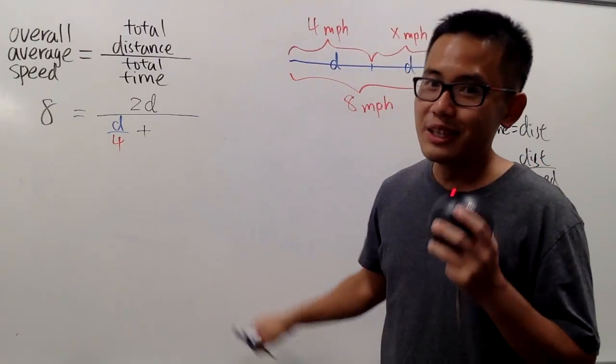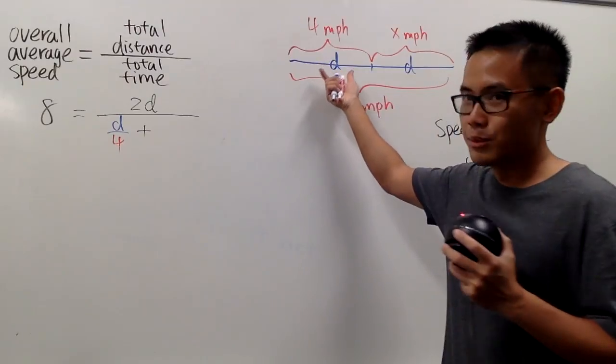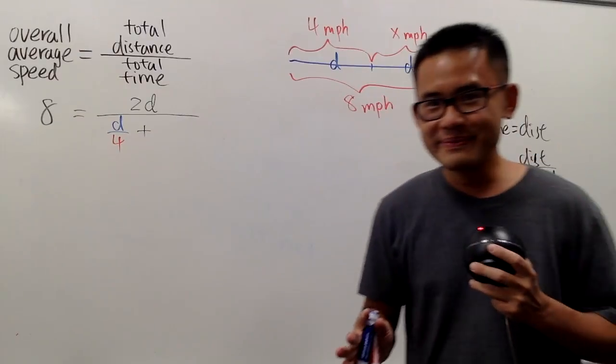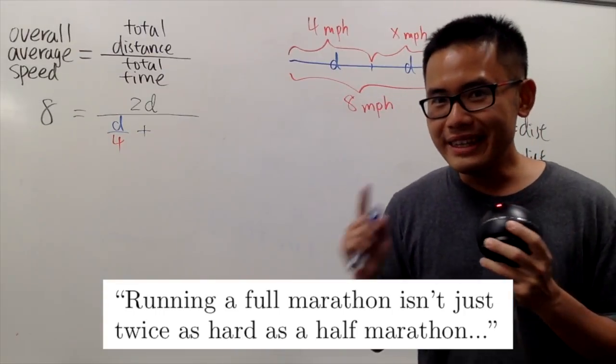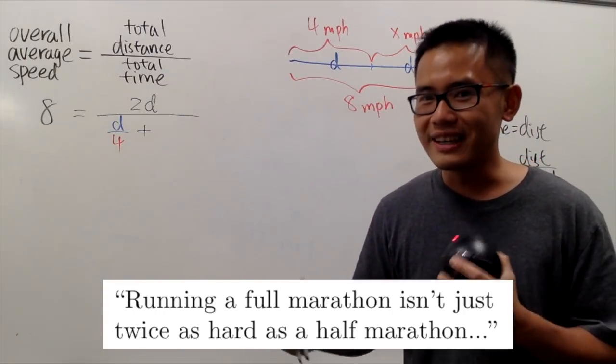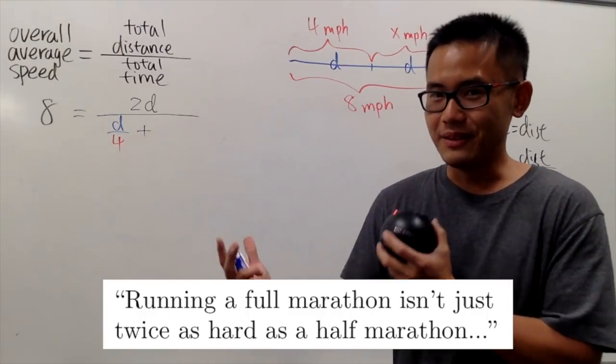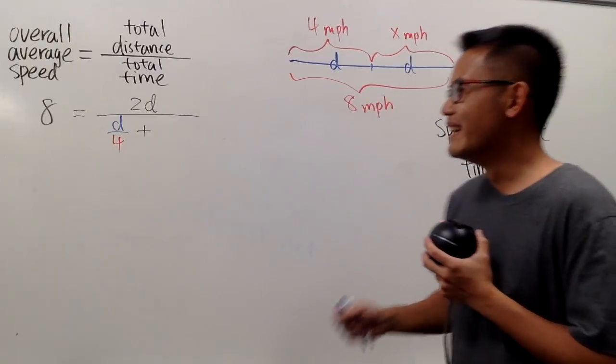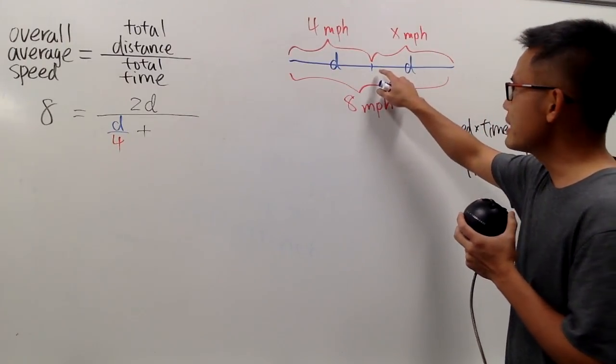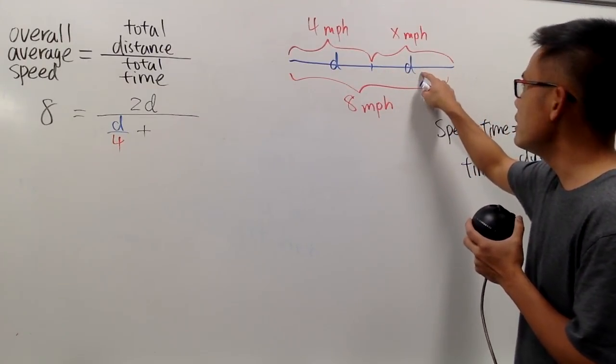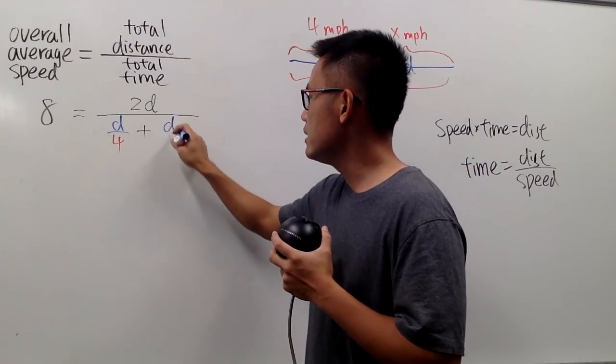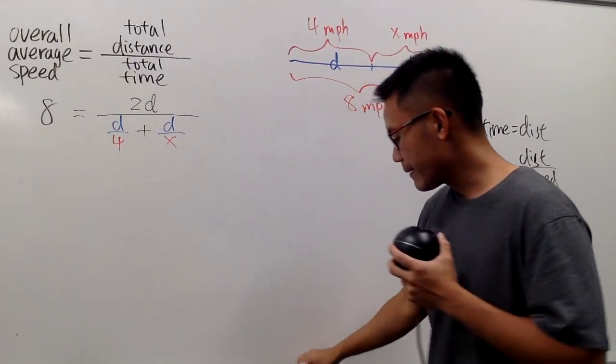Because the reality is, you don't just run the first half of the marathon, you also have to run the second half. And by the way, running the full marathon doesn't mean that it's twice as hard as running the half marathon. In reality, it's like 10 times harder. But anyway, then in the second half, once again, the distance will be d, and then the speed is just x. So right here, we will have d over x. Just like that.